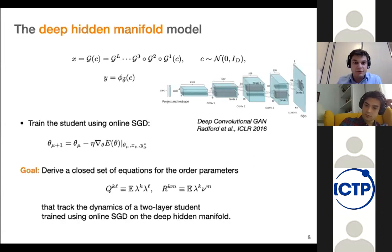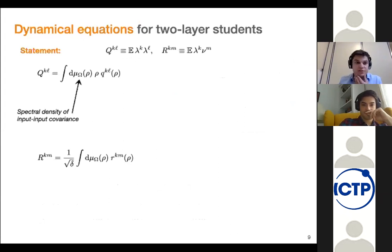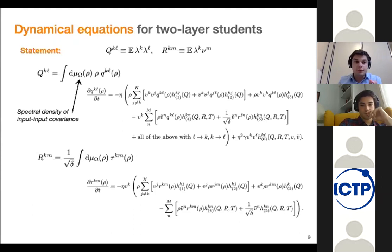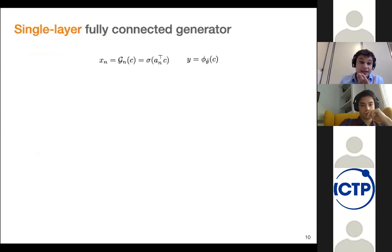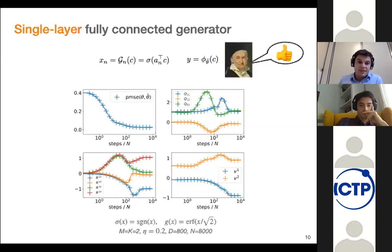The trick here is to rewrite the order parameters as an integral of the spectral density of the input covariance, then derive equations of motion for these densities. That gives you a closed set of equations you can iterate and compare to simulations of stochastic gradient descent. To give you an idea of what this comparison looks like, let's go to the case where we know the GET holds — the single-layer fully connected generator. We take a neural network, run it and train it on this data — the solid lines — and integrate the equations of motion. The crosses and lines overlap, confirming they agree.